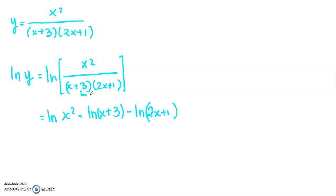This multiplication would normally be a positive — ln(x+3) plus ln(2x+1) — but since it is a division, we remember that ln(u/v) equals ln(u) minus ln(v), so this becomes a subtraction.